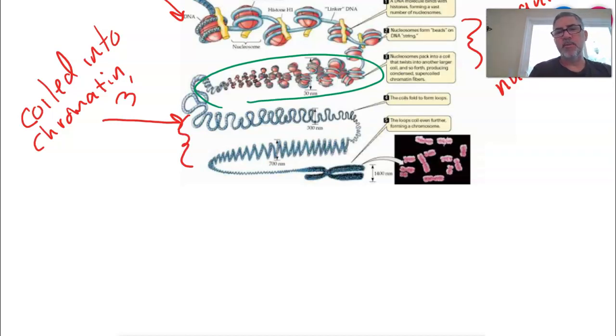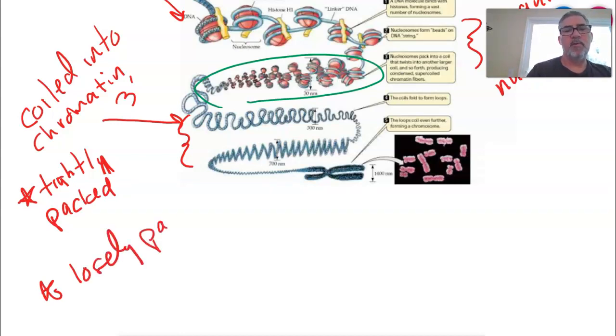These were called loop domains, remember? So chromatin has two forms, right? Tightly packed or loosely packed. And the tightly packed,